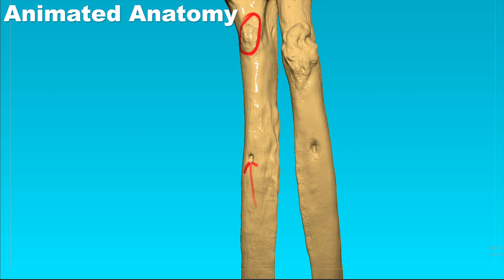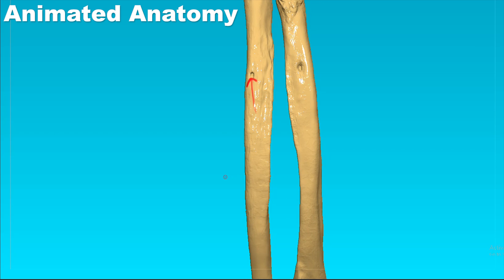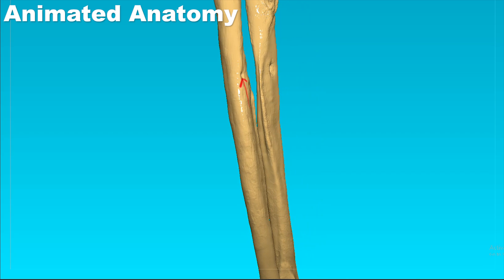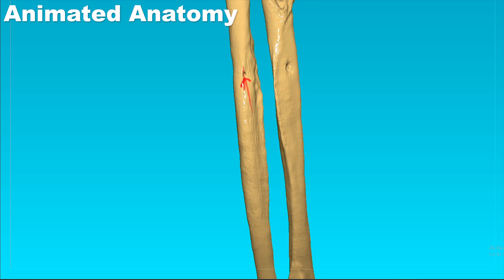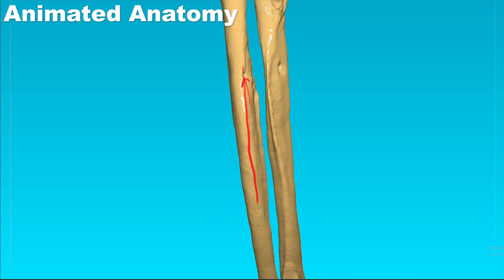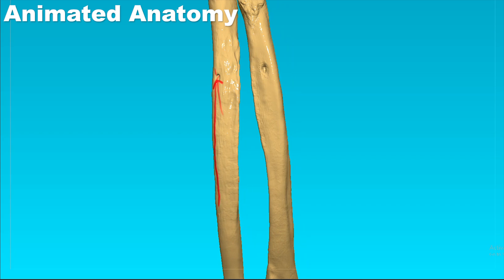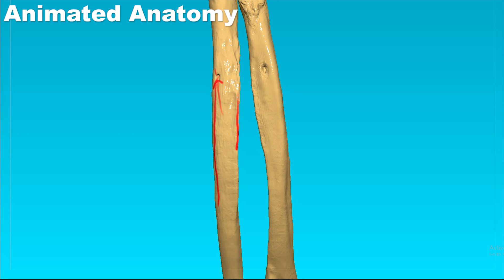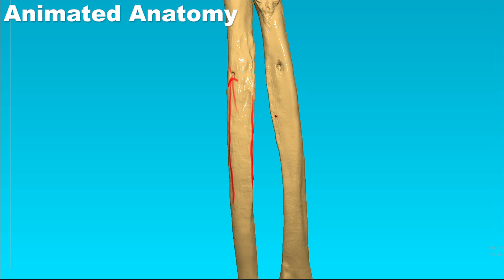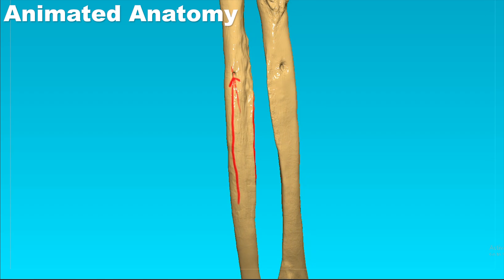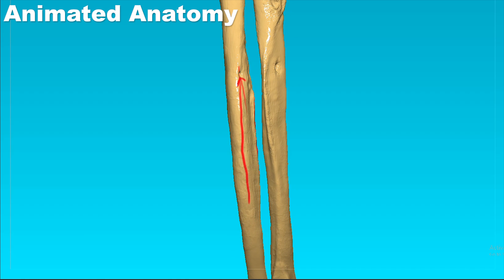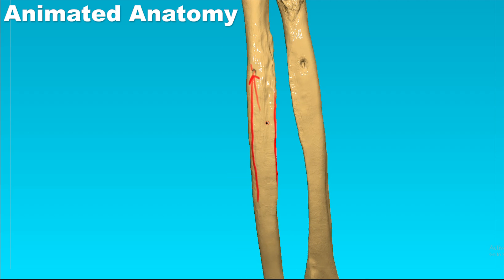Now how do we know that this is the anterior surface? Well, we first have to explain the borders of the ulna. This here would be the anterior border, this would be the posterior border, and this would be the interosseous border. The interosseous border is where the interosseous membrane attaches. The interosseous membrane also attaches on the interosseous border of the radius, but we'll talk about that a little bit later.